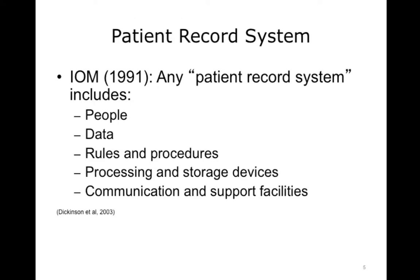So, what is an electronic health record anyway? According to the computerized patient record, published in 1991 by the Institute of Medicine, an electronic health record system is defined as the set of components that form the mechanism by which patient records are created, used, stored, and retrieved. A patient record system is usually located within a health care provider setting. It includes people, data, rules and procedures, processing and storage devices — for example, paper and pen — hardware and software, and communication and support facilities.